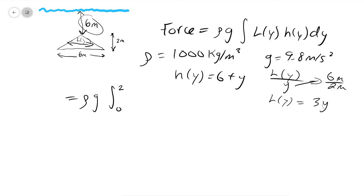So now it looks like we are all set to do this integral and find the force that's being exerted on this triangular plate. Let's plug in everything that we know. We said L of y is going to be 3y, and h of y is 6 plus y. Now, in order to find this integral and find this force, let's go ahead and plug in our constants. So I'm going to plug in 1,000 kilograms per meters cubed and 9.8 meters per second squared. And now when I do this integral, I can simply distribute my 3y to my 6 and my y, giving me 18y plus 3y squared.